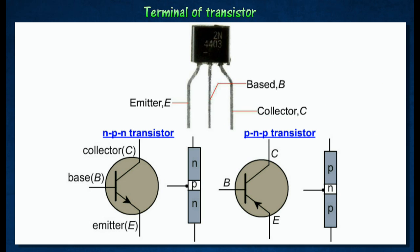In an NPN transistor, current flows from the base B to the emitter E. In a PNP transistor, current flows from the emitter E to the base B.